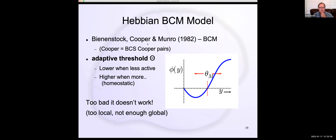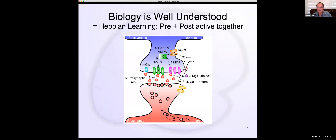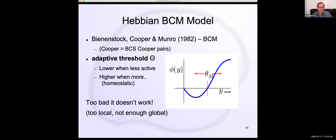There's a version of this from 1982 called the BCM model — and Cooper here is the same Cooper from the BCS model in superconductivity. This model has a lot of currency to this day and was prescient: back in 1982, very little was known about this stuff, yet it appears to be the right model for understanding what this biology does. But even this doesn't work computationally as well as we might hope.